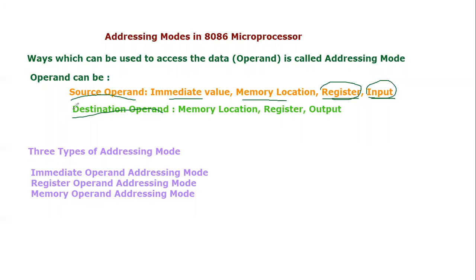For destination operand, we consider where the operand can be sent or stored. We can store information in a memory location, send a value to a register, or use an output port to send the data. So for destination purposes, the operand can go to three locations: memory location, register, or output. Note that immediate value is not an option for a destination operand, because immediate value is by nature a source, and destination operand can never be an immediate value.